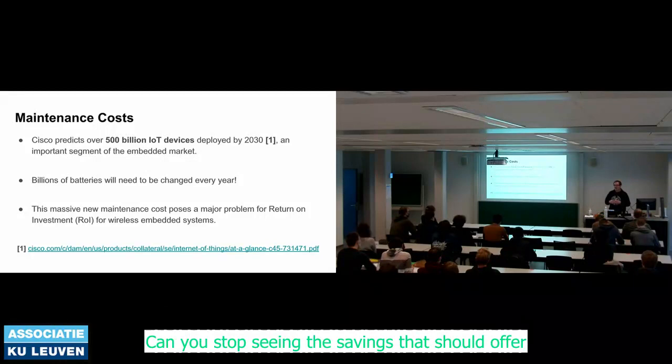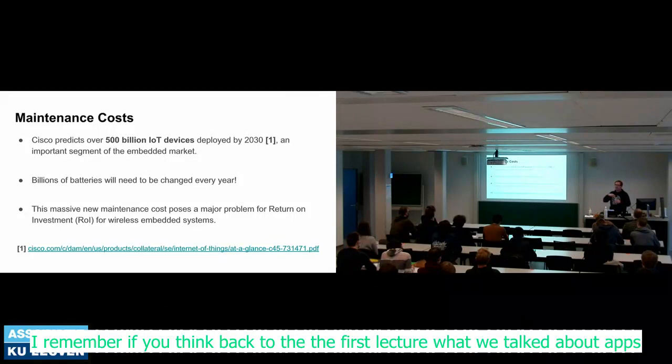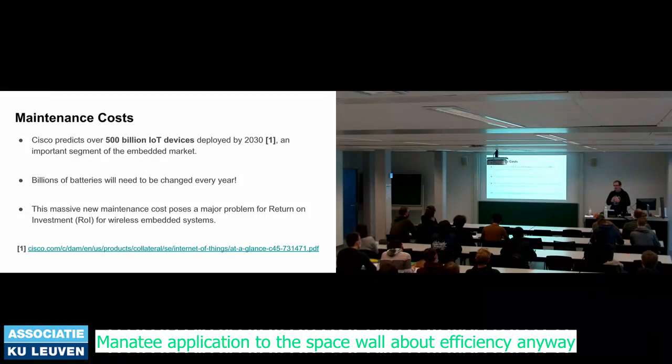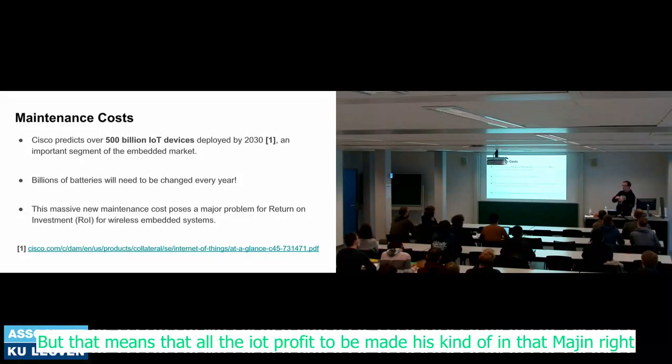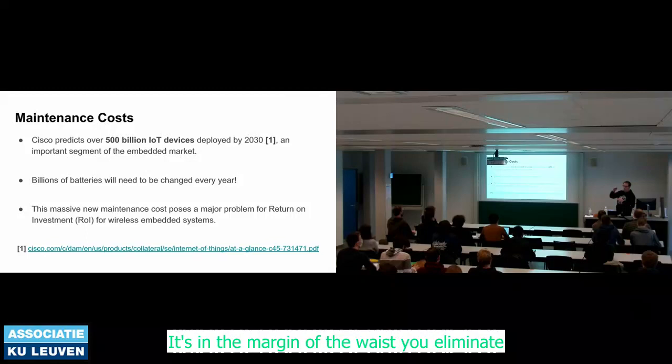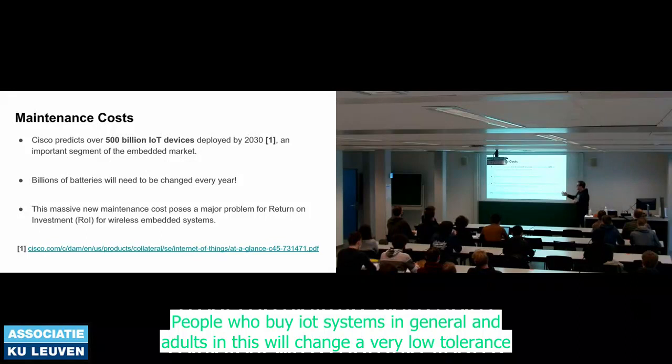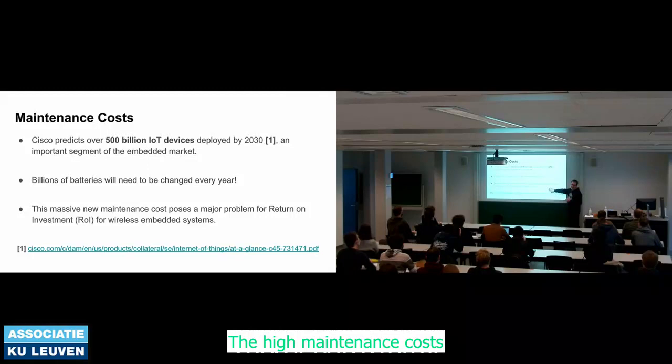Many of the applications in this space are all about efficiency — you deploy your IoT node on a motor to make sure it doesn't vibrate too much and cause costly downtime. All the IoT profit is in the margin of waste you eliminate. That means people who buy IoT systems generally have a very low tolerance for high maintenance costs.